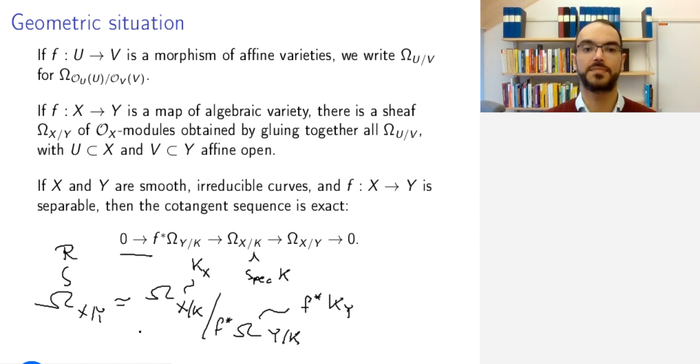All of this can be made precise using the language of quasi-coherent sheaves. If you do that, then by taking degrees and observing the properties of degrees, this will give us precisely the Riemann-Hurwitz formula.